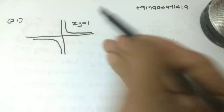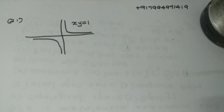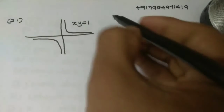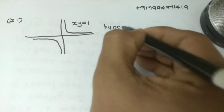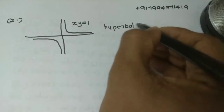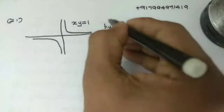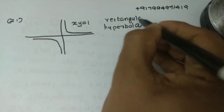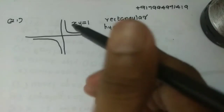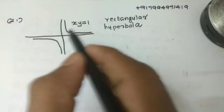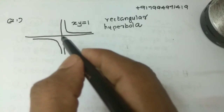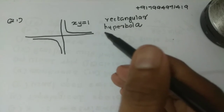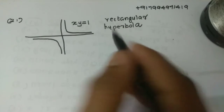Rectangular hyperbola — we will have to see the closer conditions and the bounds. We will have to see how to examine it more carefully.